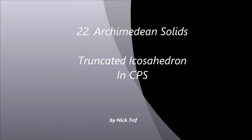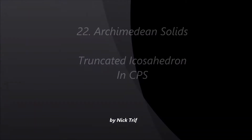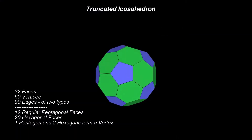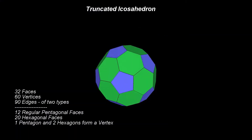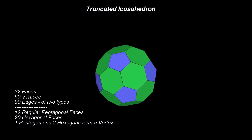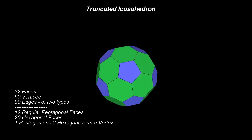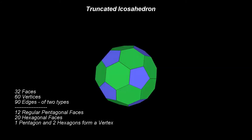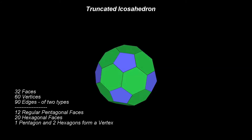Truncated Icosahedron in CPS. By far, the best known Archimedean solid is the truncated Icosahedron.